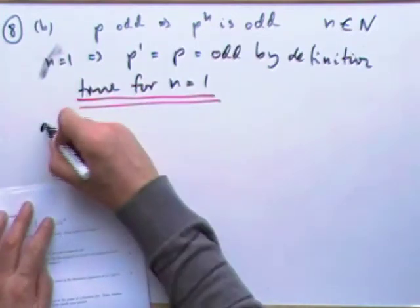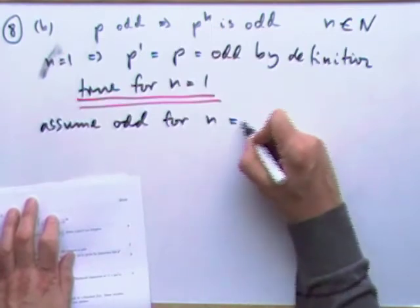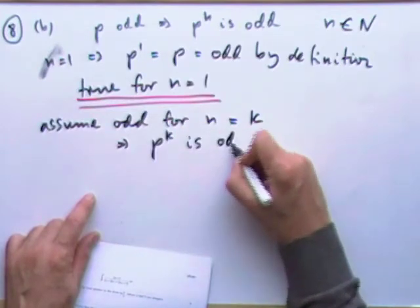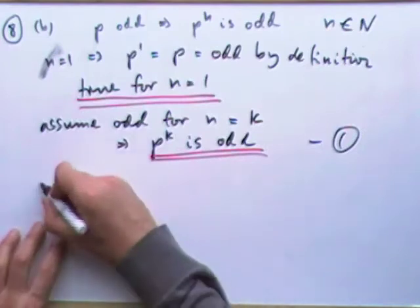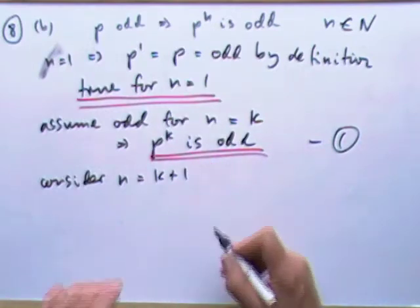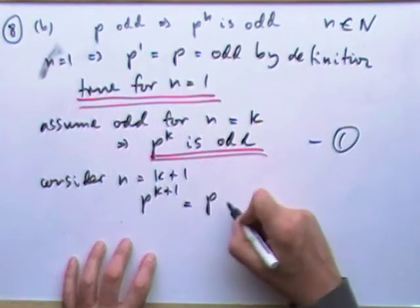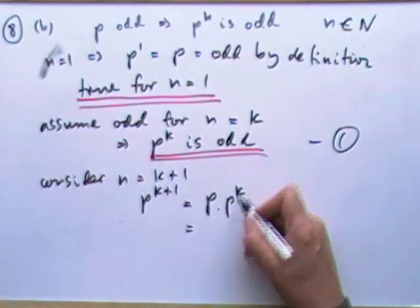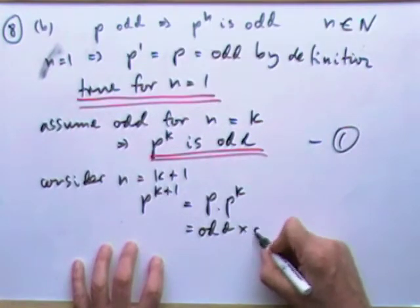Assume it's true for some power n = k, so the inductive hypothesis is: p^k is odd. Then consider n = k + 1. We have p^(k+1) = p × p^k. Now p^k is odd by hypothesis, and p is odd by definition, so we have an odd times an odd.